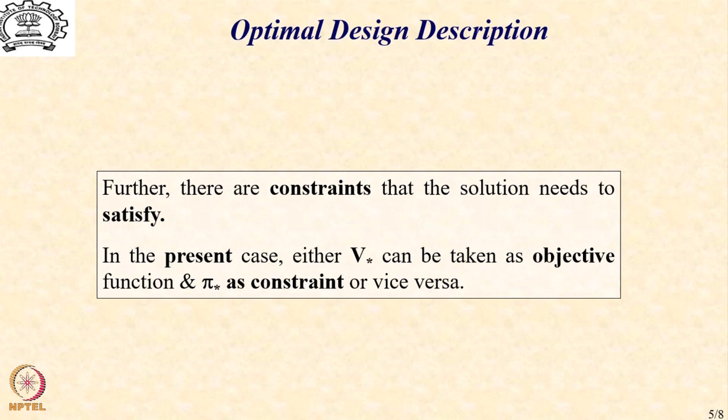Because we have stated two separate types of problems that we can solve, we can also have the optimal design problem statement in both these cases. That is, we can either take the burnout velocity as an objective function which is to be maximized and the mission payload fraction pi star as a constraint or we can reverse the process and choose pi star as the objective function that needs to be maximized and v star as the constraint.